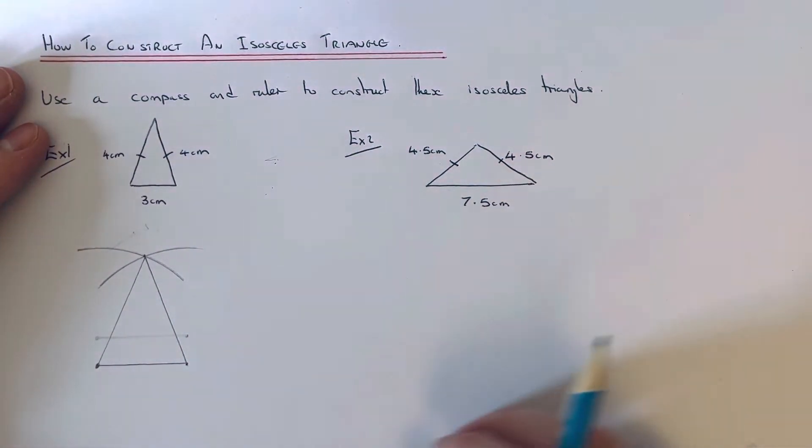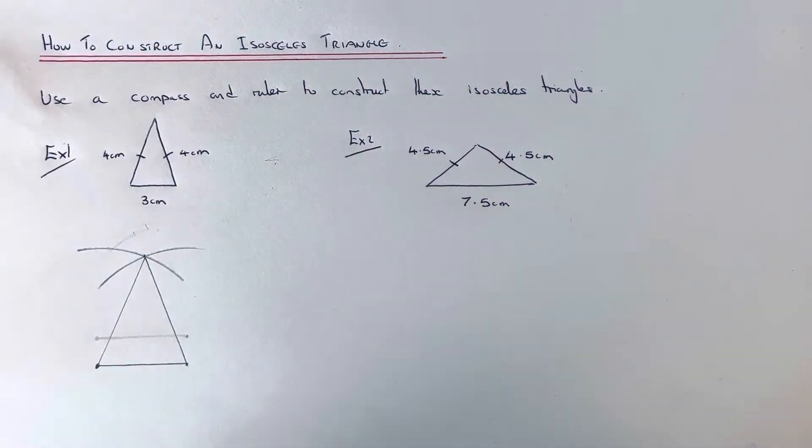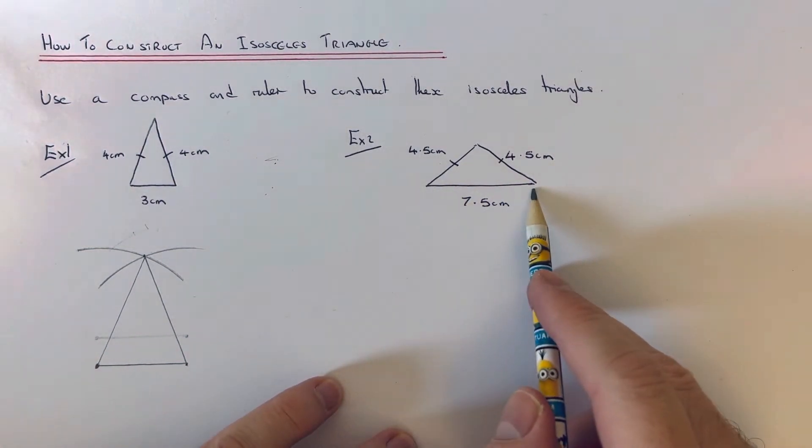That is our isosceles triangle drawn accurately. Let's look at the second example. This time the bottom edge needs to be 7.5 centimeters and we've got two sloping edges of 4.5 centimeters.